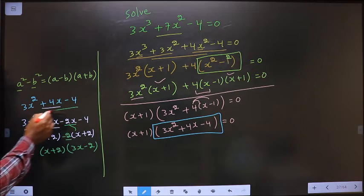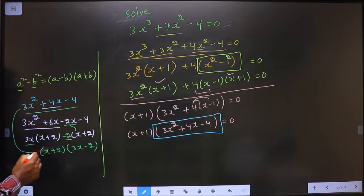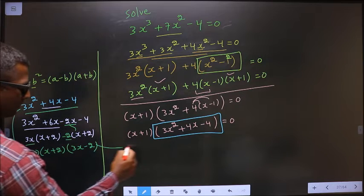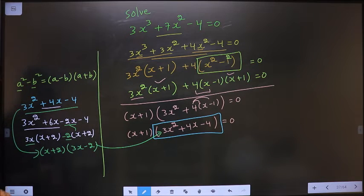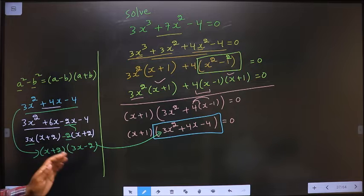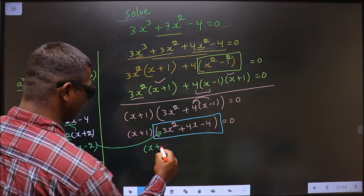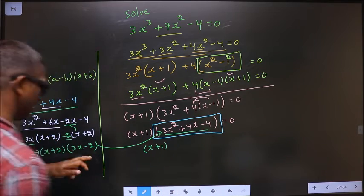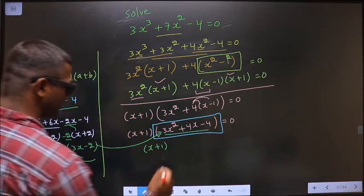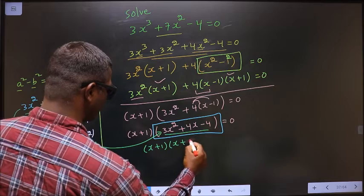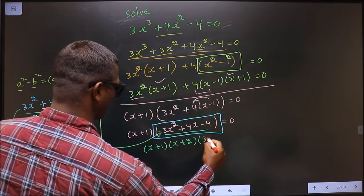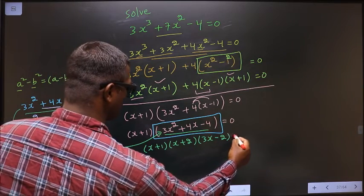Now, in place of this quadratic, now I replace this over here. So this is x + 1. In place of this quadratic, now I write this: x + 2 and 3x - 2 = 0.